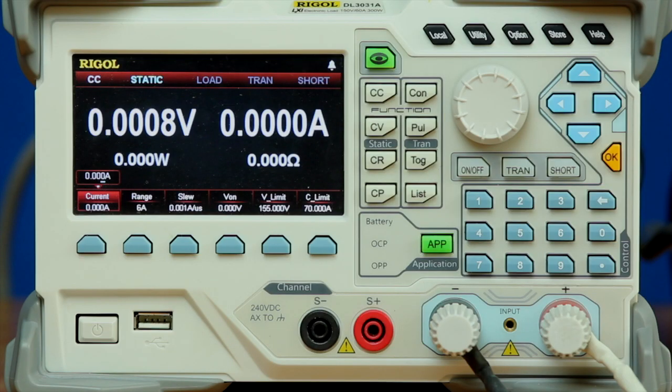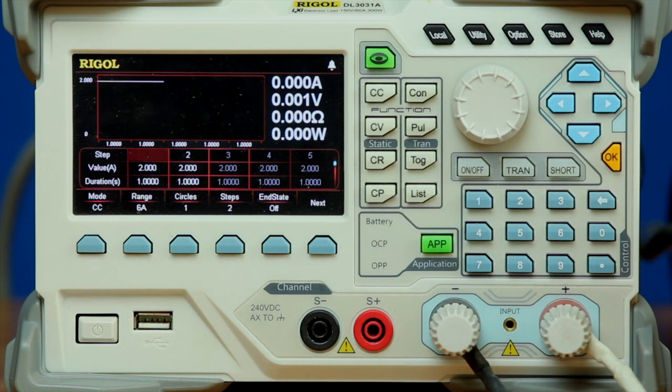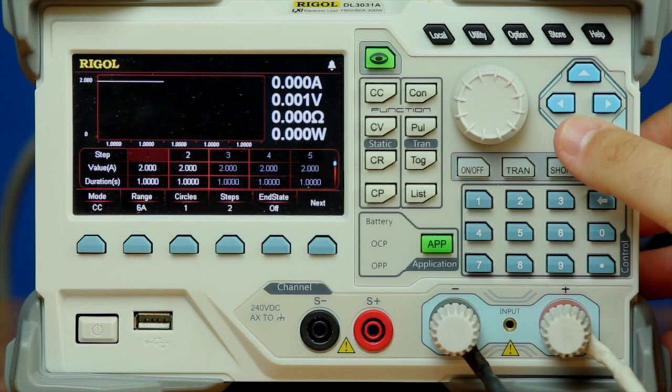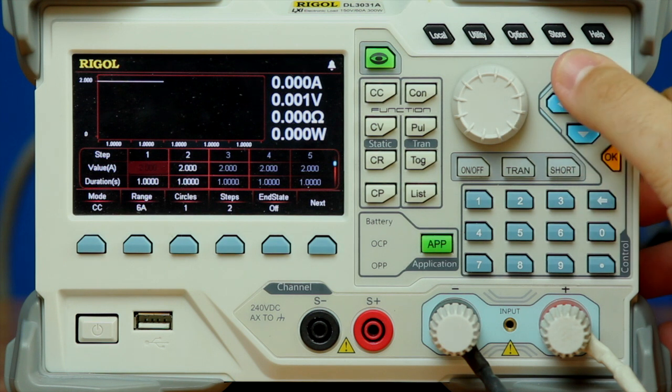In order to have our electronic load draw the same amount of current as our robot during its nominal power draw, I'm going to use the instrument's list mode. In list mode, I'm going to set up so it has two separate steps. First step's going to be our high level, and then the second step's going to be our low level. In order to do so, I'm going to go in and set our values for our amperage here.